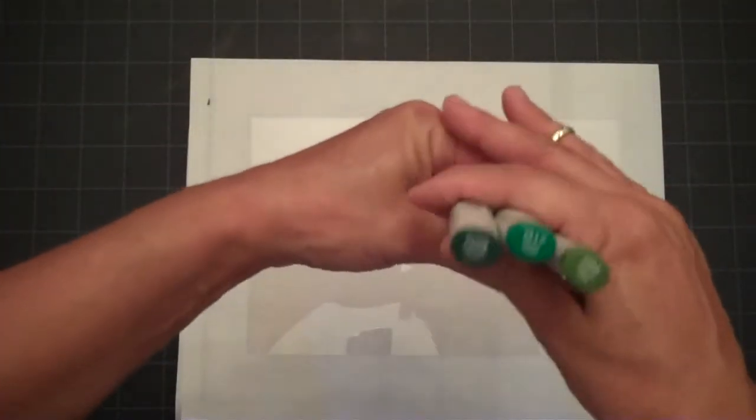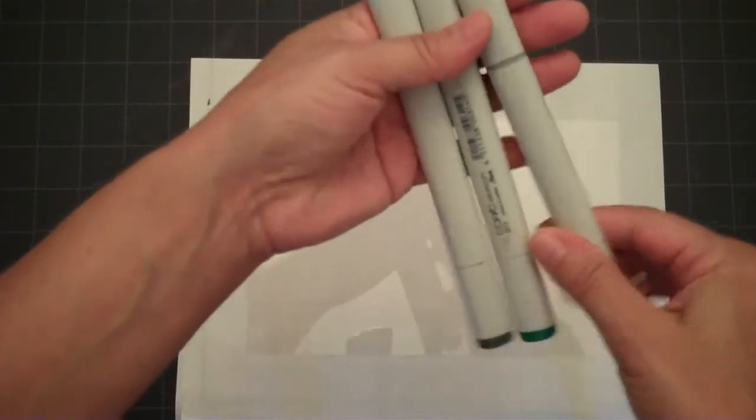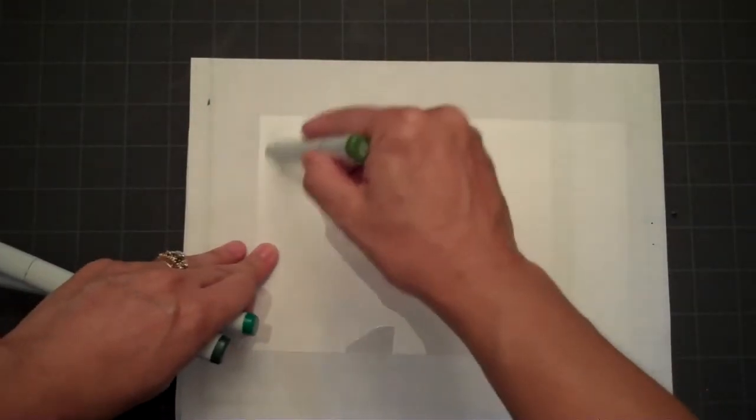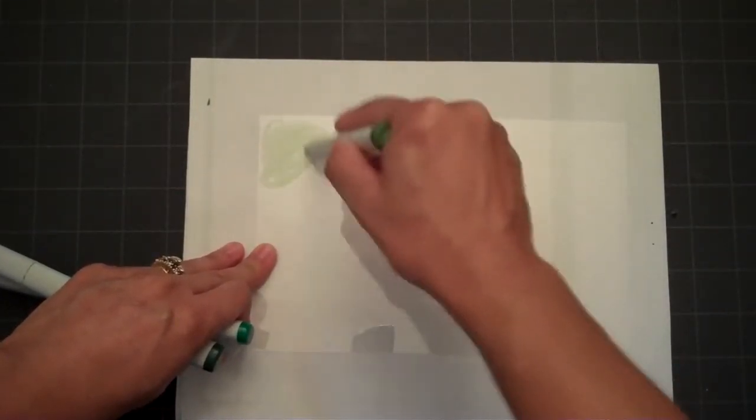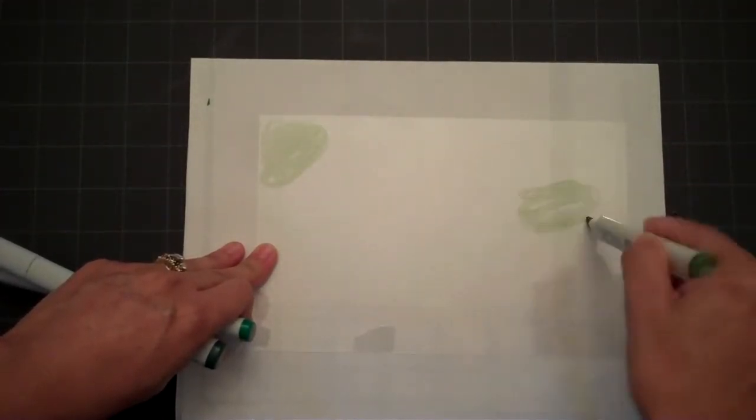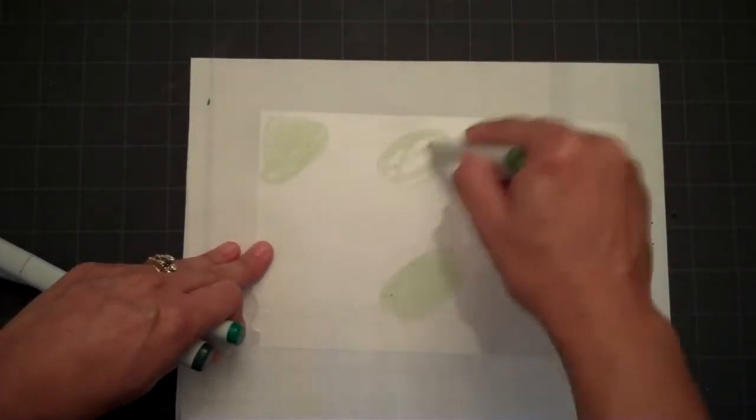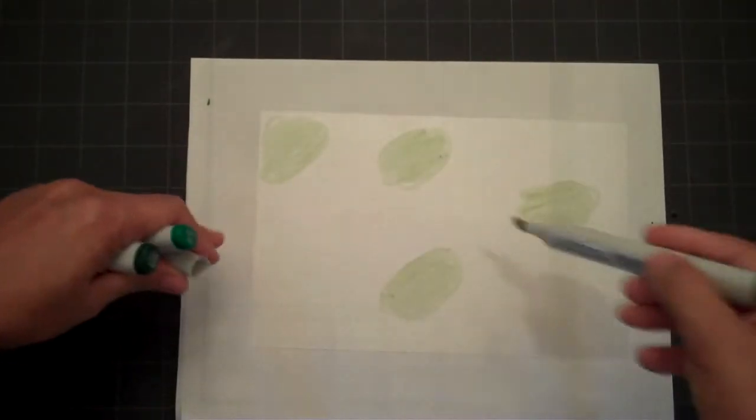The first thing that you do is, I've got three different colors of Copic markers. You can use two or three different colors, and you do use the chisel end. What you do is just go around and just add a blob of color, just randomly on the acetate. Since I'm using three colors, I'll go ahead and switch out,